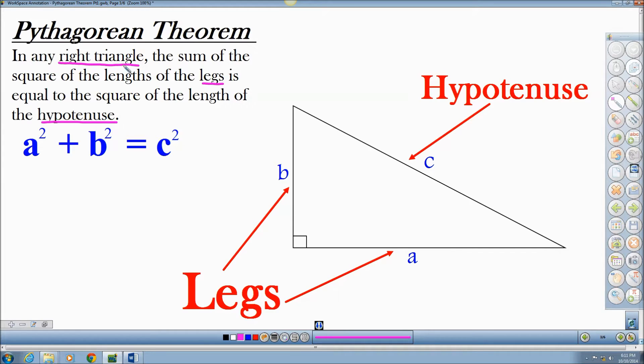A right triangle is a triangle with a 90 degree angle. This little square or box right here shows you that it's a 90 degree angle, which makes a right triangle. The legs actually make that 90 degree angle. They make the L here, sides A and B. These are the legs.